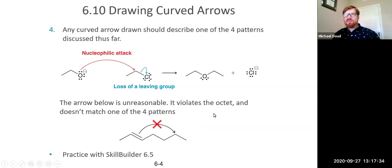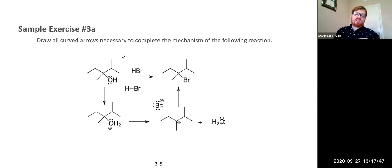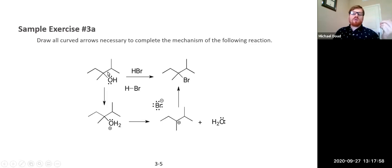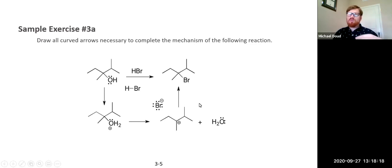Now let's look at our first sample problem. We want to draw the curved arrows necessary to complete the mechanism of this reaction. Going left to right, this is your reactant and your product. We want to describe the mechanism by drawing the curved arrows at each step — step one, step two, step three. We have two sample exercises, 3A and 3B. I'll walk you through the first one and then let you try the second.